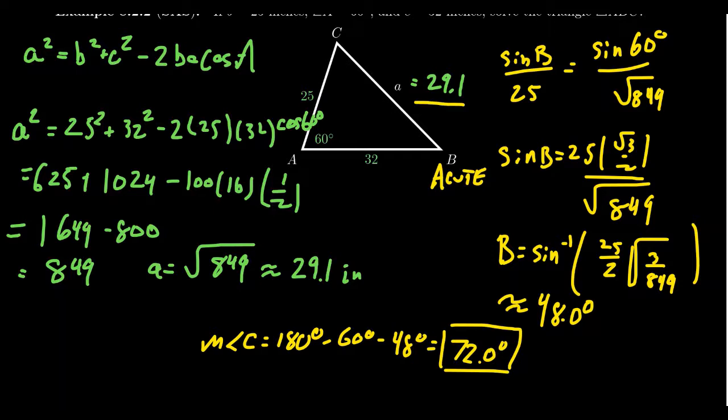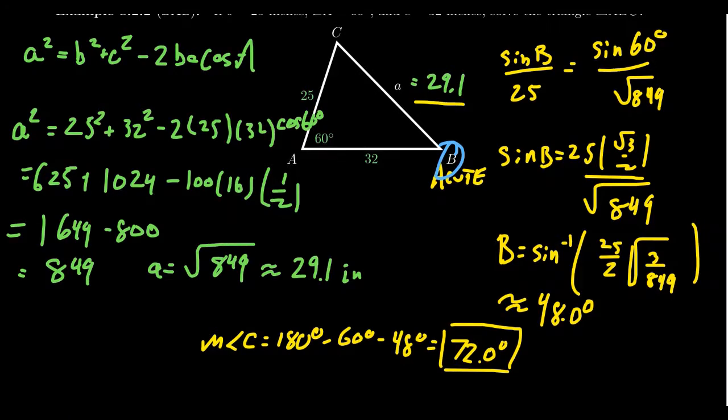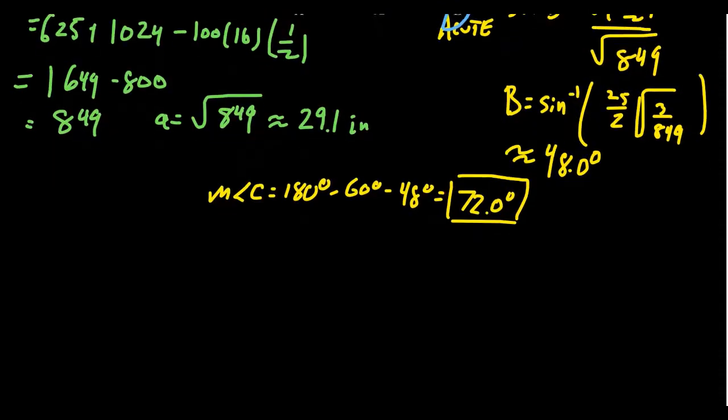Now I should mention as an alternative approach, we could have actually used the law of cosines to solve for angle B because cosine inverse can tell the difference between an obtuse angle and an acute angle. So one of the advantages of using the law of cosines again is that you don't have to worry about this. Do I pick the smaller angle or not? In that situation, you'd get B squared equals A squared plus C squared minus 2AC cosine of B, like so.